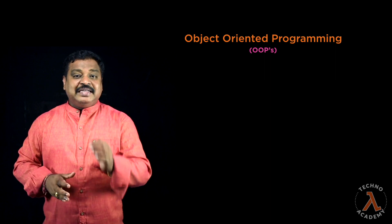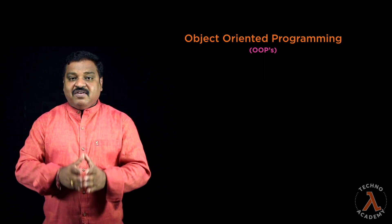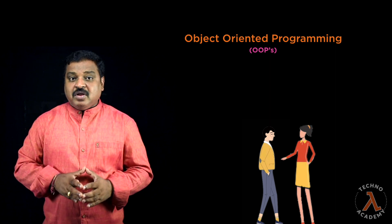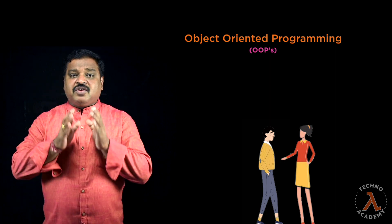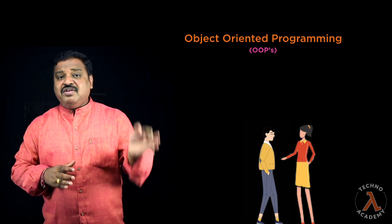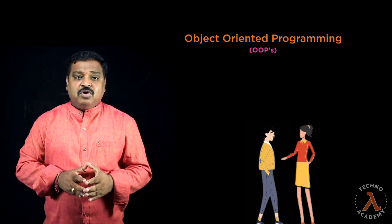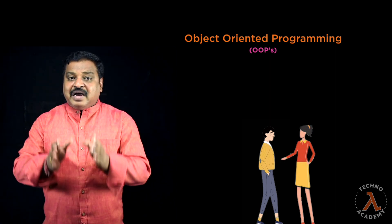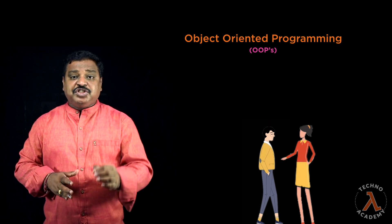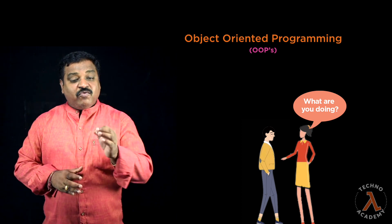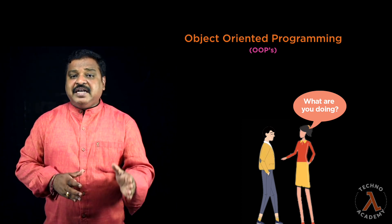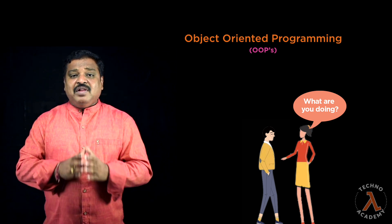In this video let us understand these concepts in a simple, non-technical way. Assume you are walking on the road and someone stops and asks you, 'What are you doing these days?' Assume the question is asked by a hi-bye type of friend — someone you met at a party, a function, or a fellow passenger on a bus, train, or flight. You might say, 'I am currently working at so-and-so company' or 'I am studying at so-and-so institute,' and then you both leave.